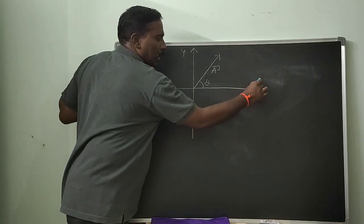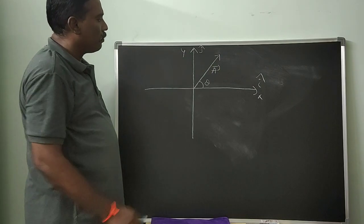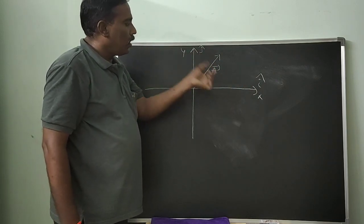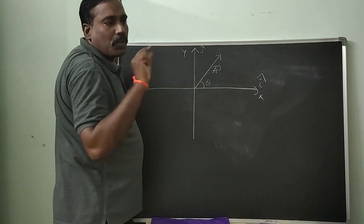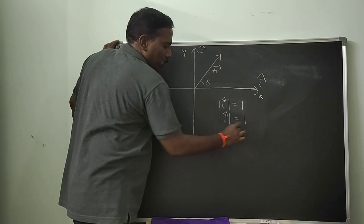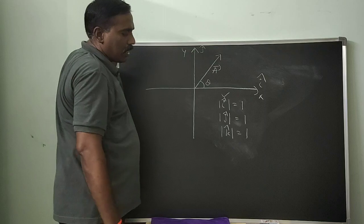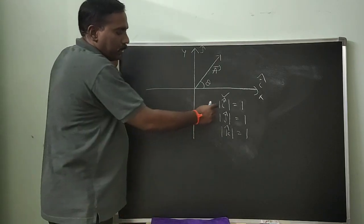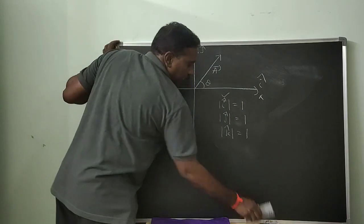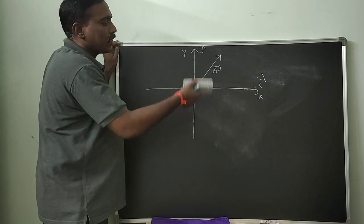We know that i-cap is the unit vector along the x-axis, and j-cap is the unit vector along the y-axis. What are unit vectors? A unit vector represents the direction. The magnitude of a unit vector is 1 — modulus of i-cap is 1, modulus of j-cap is 1, modulus of k-cap is 1. Here, i-cap is along x-axis, j-cap is along y-axis, and k-cap is along z-axis. A vector whose magnitude is 1 is known as a unit vector. Unit vector gives the direction.